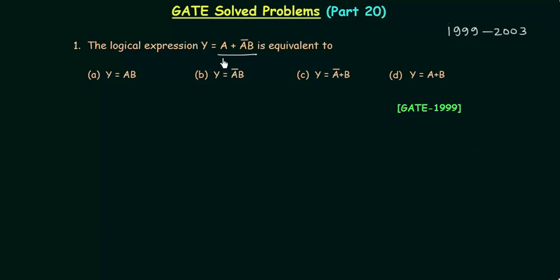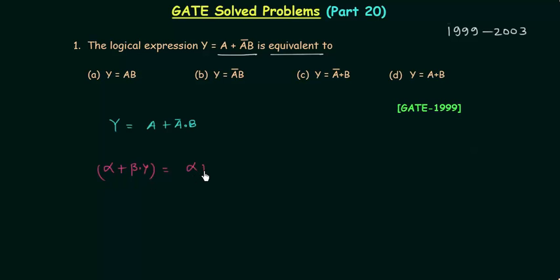We have to calculate the equivalent of this logical expression. I will use the distributive law: if we have alpha or (beta and gamma), then we can write it as (alpha or beta) and (alpha or gamma). We can easily prove this.